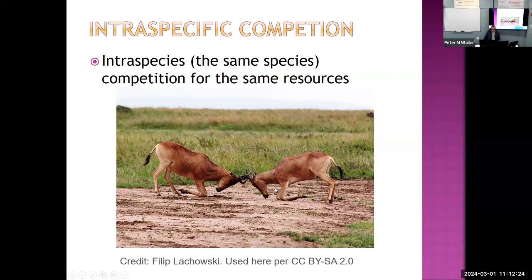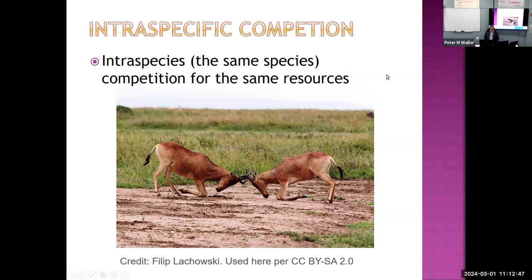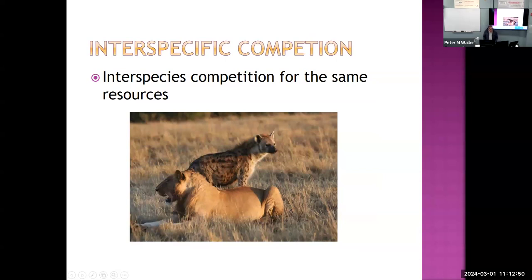For example, these two wildebeests are competing for females. The one able to win the fight propagates its genes, and if one had a positive mutation enabling it to win fights, it would be selected in future populations. There's also interspecific competition, which takes place when two species compete for the same resources — such as a lion and a hyena competing for the same wildebeest and other grazing animals.